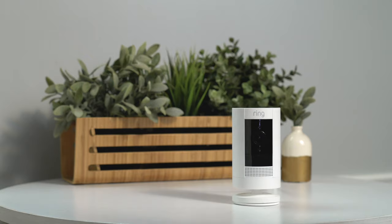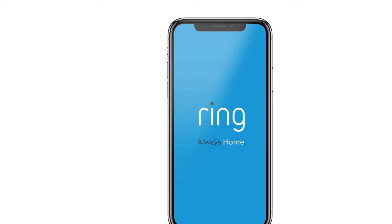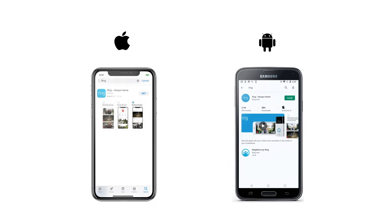To get started, bring your Stick Up Cam to the room where you plan to install it. Now open the Ring app on your phone or tablet. It's available on the App Store and Google Play Store.